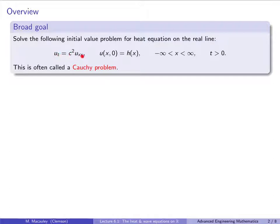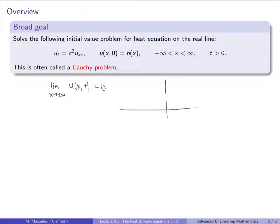Here's the same old heat equation that we know and love. We have an initial condition, except now x can be any real number. This is an initial value problem because there are no boundary conditions. That said, sometimes we can prescribe a pseudo-boundary condition: the limit as x goes to plus or minus infinity is 0. Realistically there can't be an infinite amount of heat, but often these conditions are built in or implied — we don't necessarily have to specify them.